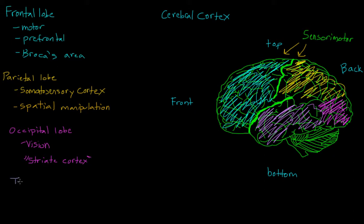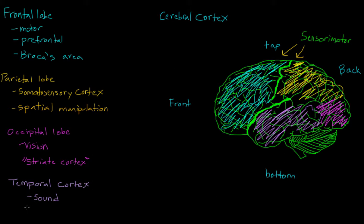The last lobe of the brain is the temporal cortex, shown in violet. This is the part of your brain responsible for auditory processing — information comes in through our ears but is processed in our temporal cortex. Another important area in the temporal cortex is Wernicke's area. When we talked about the frontal cortex, we discussed Broca's area, responsible for speech production. Wernicke's area, by contrast, is responsible for language reception and language comprehension.